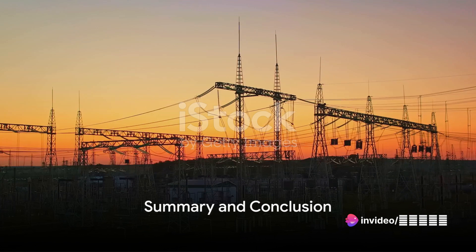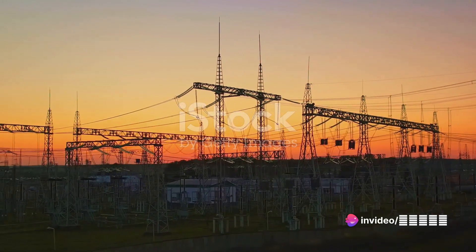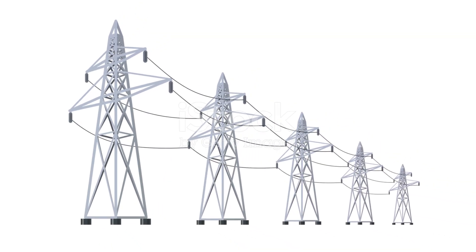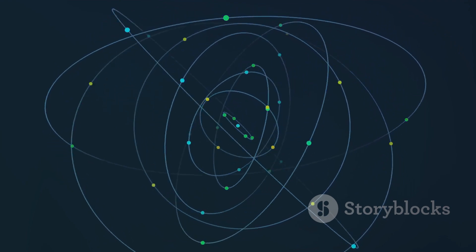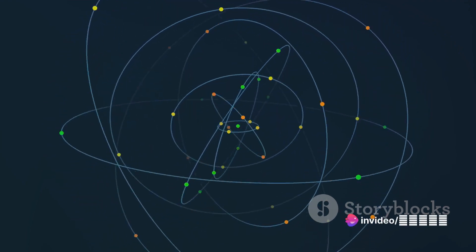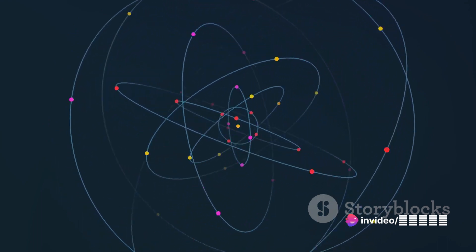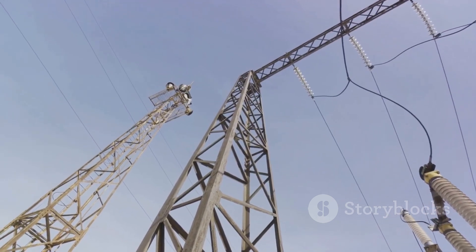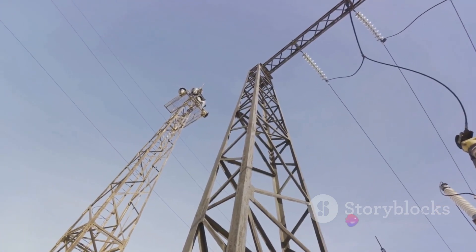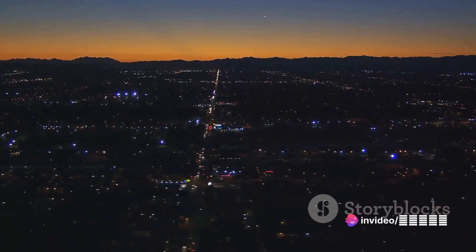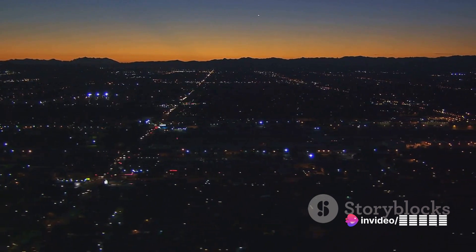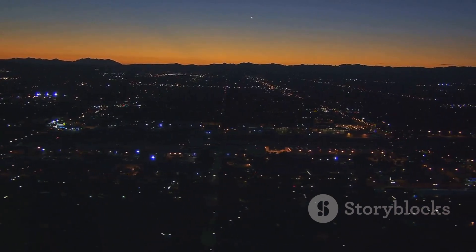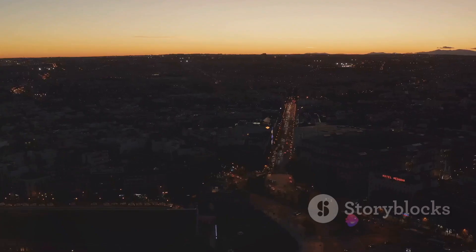So we've journeyed through the radial, ring main and interconnected network systems, each with its unique advantages and challenges. The radial system, like a branching tree, is straightforward and cost-effective, yet its reliability can be compromised by a single fault. On the other hand, the ring main system, forming a closed loop, improves reliability by allowing power to flow in either direction, making it ideal for urban areas where consistent power supply is vital. Lastly, the Interconnected Network System — a complex grid-like pattern connecting multiple substations — offers enhanced reliability and flexibility, especially in large urban areas with high power demand.